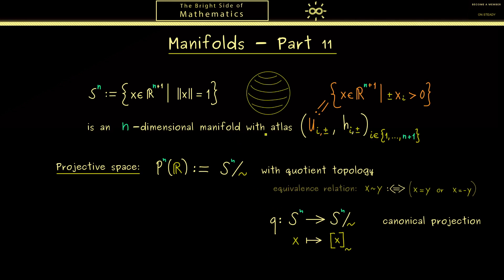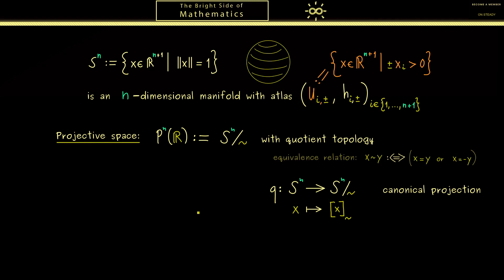Usually we call this special map just q. Here please recall it just maps the point x to its equivalence class. Now we are ready to define an atlas for P^n(R). As before for the sphere, we need to cover the whole topological space with open sets. Therefore I want to define the set V_i, and this is given as the set of all points in P^n(R)—so all equivalence classes—with the property that x_i is not zero. Please note by the definition of the equivalence class, this set is well-defined. Please recall an equivalence class just consists of two points.